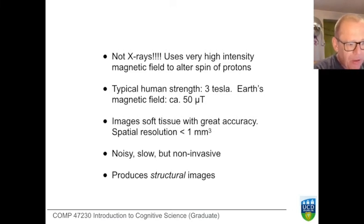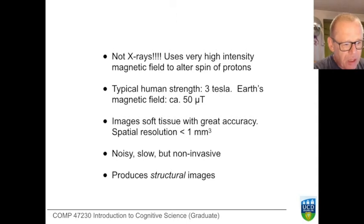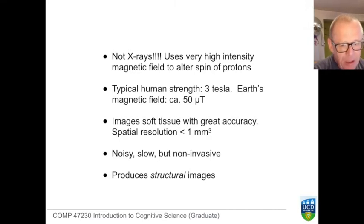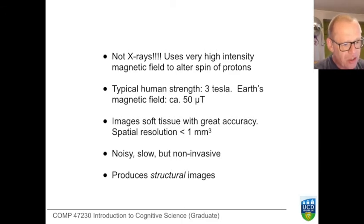It's a complex form of measurement, and in any study using this, very few people will understand all the pieces that go into making the resulting image. Magnetic resonance imaging can image soft tissue, not just hard tissue, and it does so with great spatial accuracy — you can spot things smaller than a cubic millimeter. It's noisy and slow, but it's not invasive and doesn't do any harm to be in, apart from the psychological discomfort. It produces images of structure.